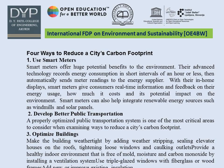We will now discuss the different ways to reduce a city's carbon footprint. The first one is using smart meters. Smart meters offer huge potential benefits to the environment. Their advanced technology records energy consumption in short intervals of an hour or less, and automatically sends meter readings to the energy supplier. With in-home displays, smart meters give consumers real-time information on energy usage, cost, and environmental impact. They also help integrate renewable energy sources such as windmills and solar panels.